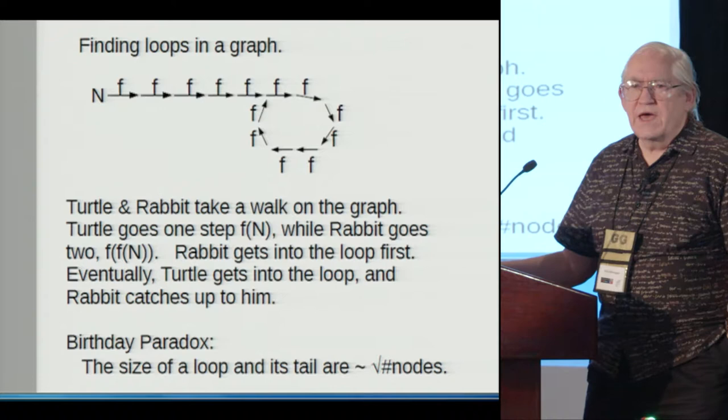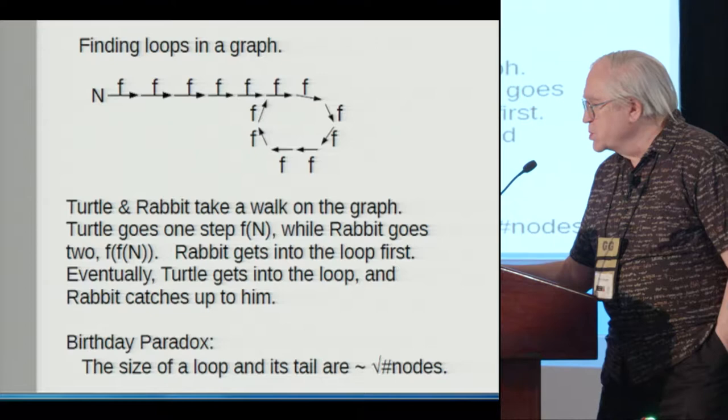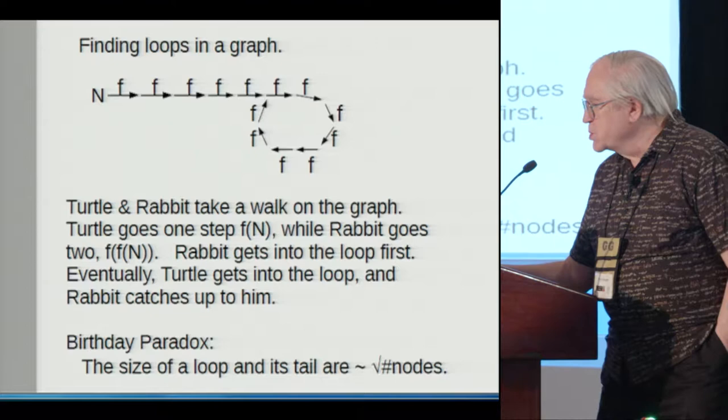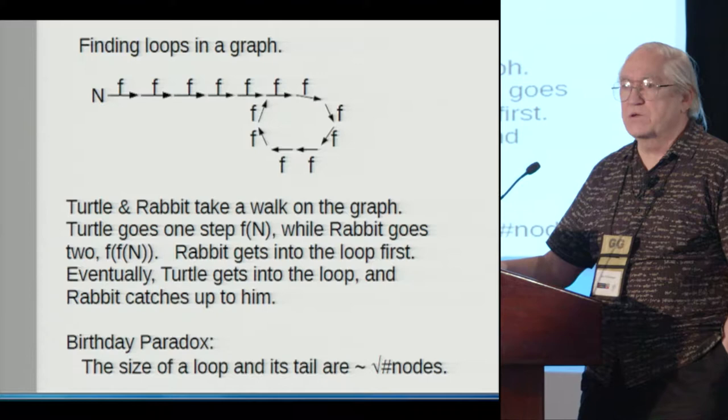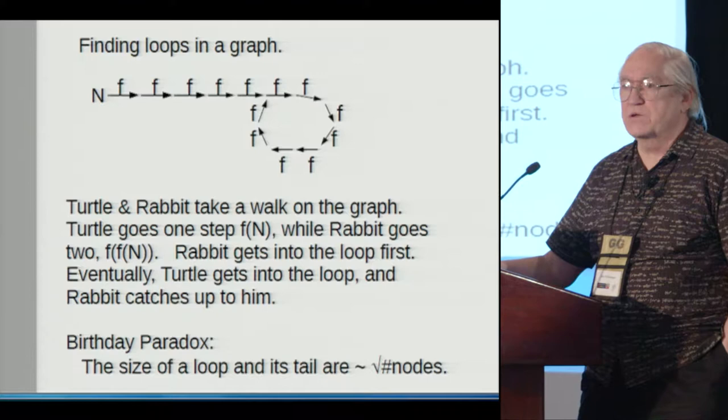Okay, I have a very slight digression on how you find loops in a graph. This was known 50 years ago, more than 50 years ago, back in the deep, dark ages of computing. If you're applying a function over and over again, and you don't have the memory around to keep a record of all your f's, or you don't want to spend time comparing values, then what you can do is something I call turtle and rabbit.